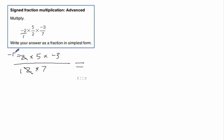So now we just multiply straight away. Negative 1 times 5 is negative 5. Negative 5 times negative 3 is positive 15. Down here we just have 1 times 7.